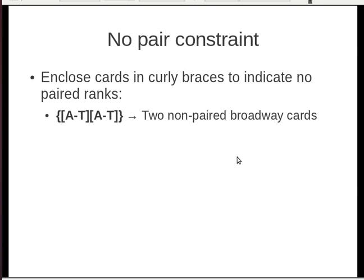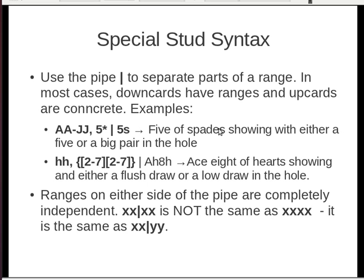There is also a no-pair constraint if you want to quickly specify that a hand has no pairs. You just put curly braces around all the cards. So this describes a hand with two Broadway cards that are not paired — useful for high-low games.